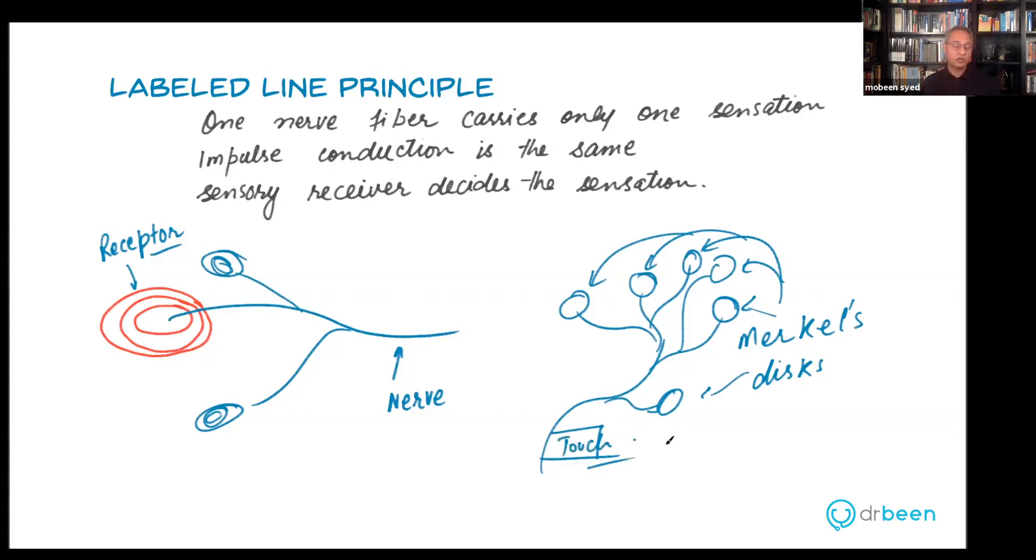And that's about it. You cannot say this specific nerve is also carrying vision. That's not going to happen. So this much is clear. This is called labeled line principle: one kind of receptor, one kind of nerve.